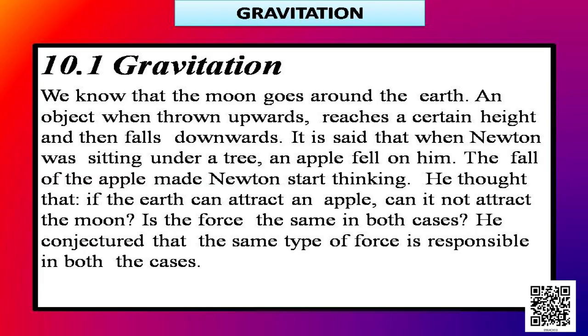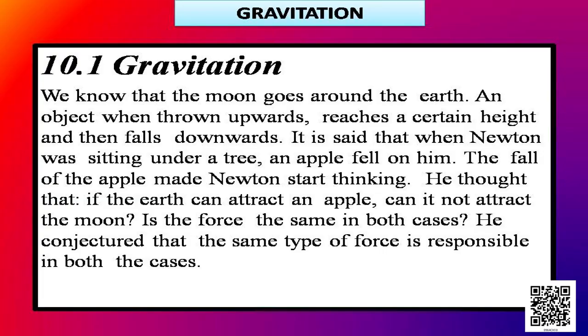We know that the moon goes around the earth and objects when thrown upwards — you face similar situations in our day-to-day life. Think about a cricket ball. When we throw it upwards, the player comes under it and catches it. How come it doesn't go to the sky? Why does it come back? When you throw any stone upwards, it comes back. An object thrown upwards reaches a certain height and then falls downwards.